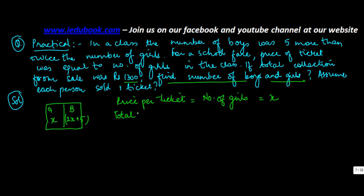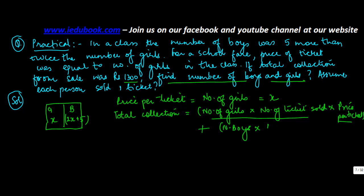So total collection will be equal to what? It will be equal to number of girls times number of tickets sold times price per ticket. Each one of them sold one ticket each. So I just kind of simplified this entire thing into one single line. Now total collection we are told is how much?